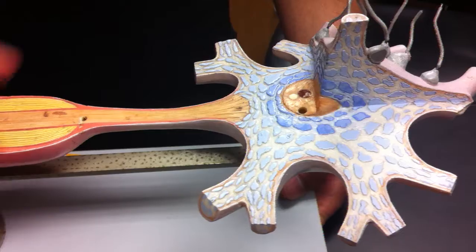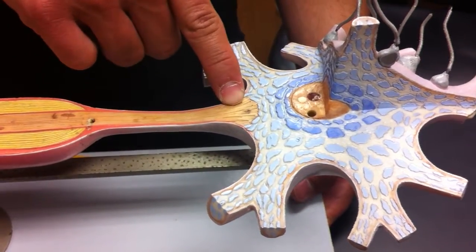You have your dendrites. At the beginning of the axon here you have your axon hillock.